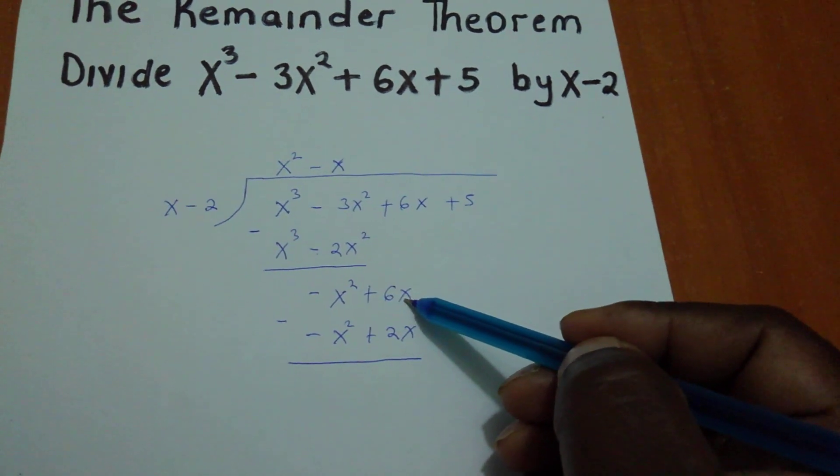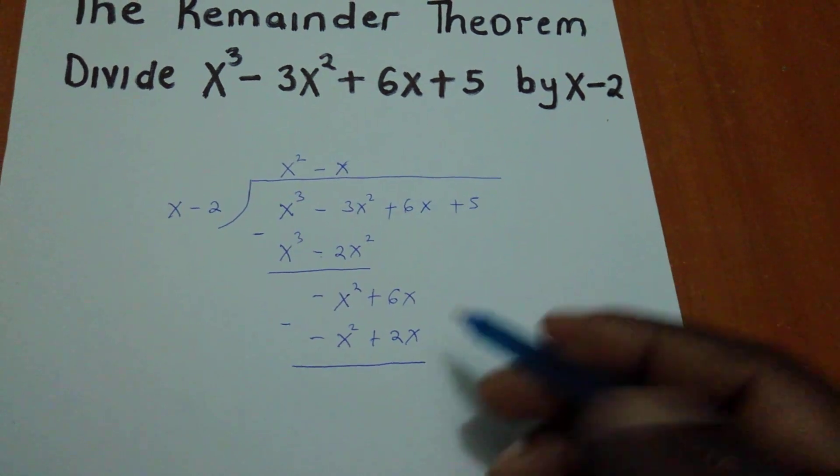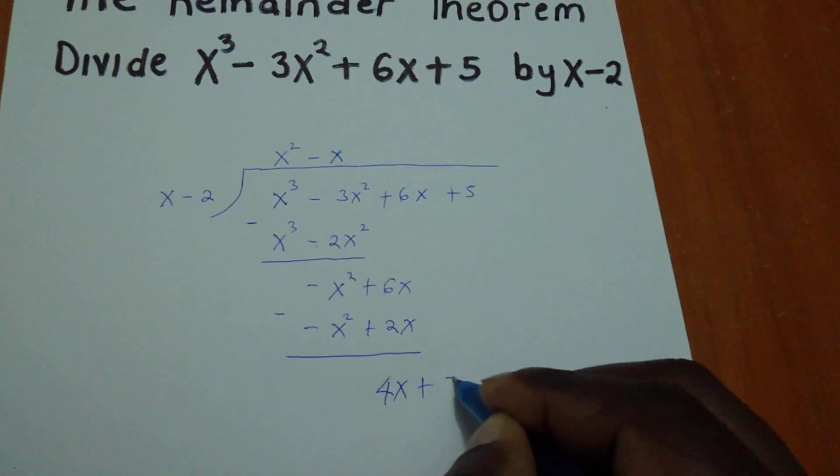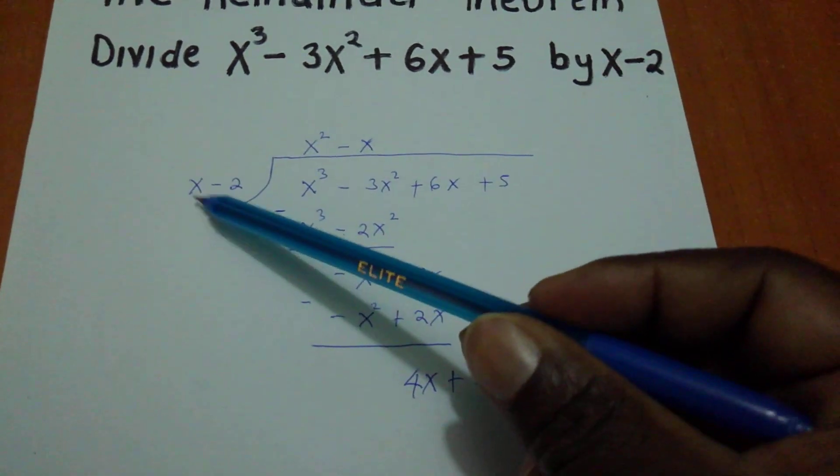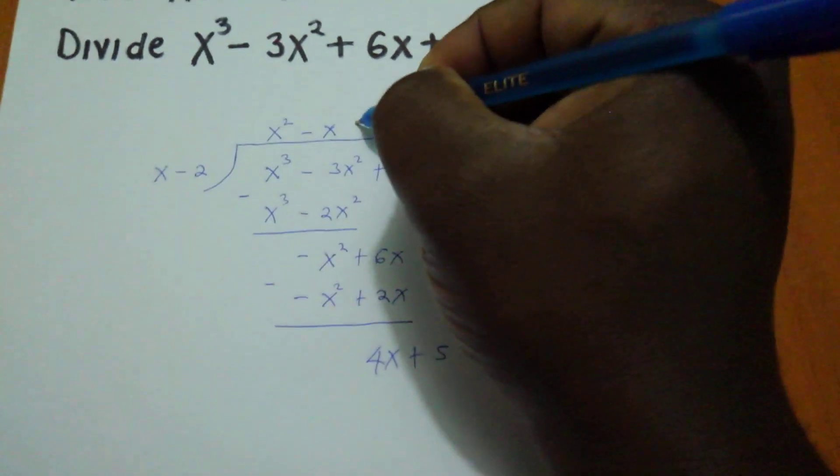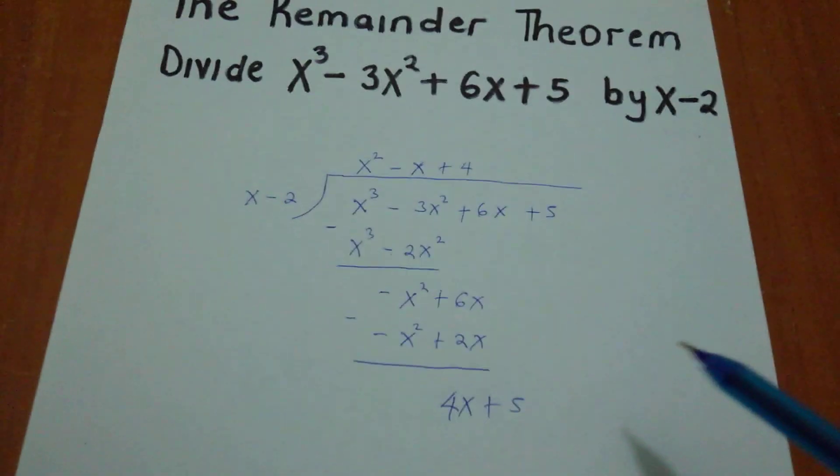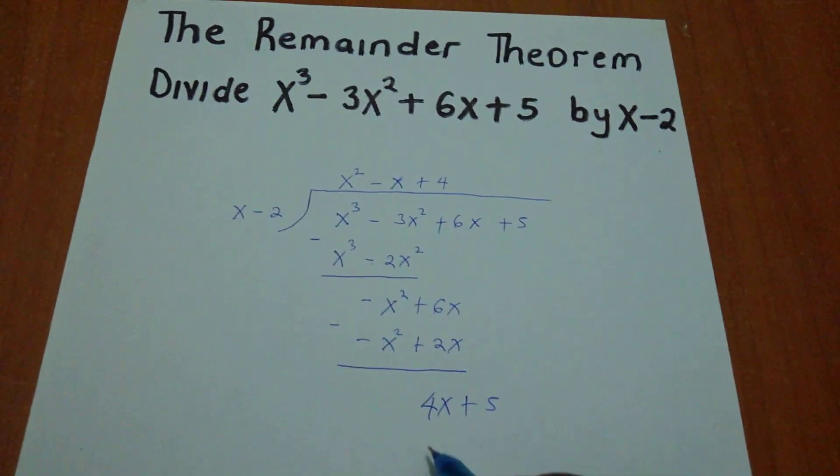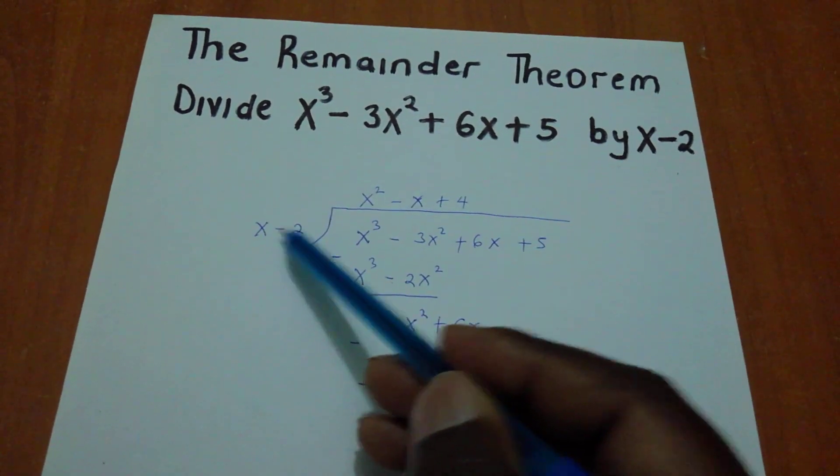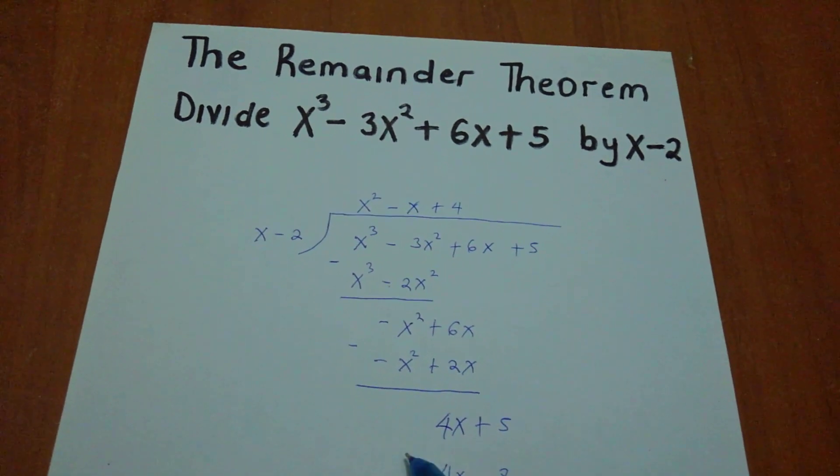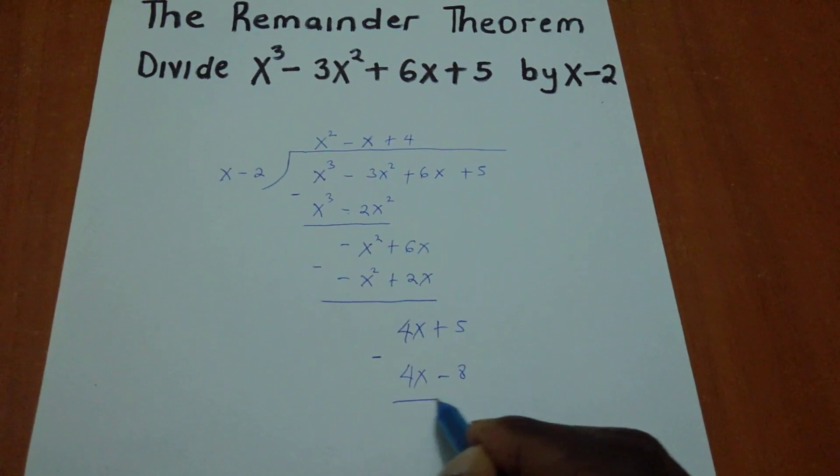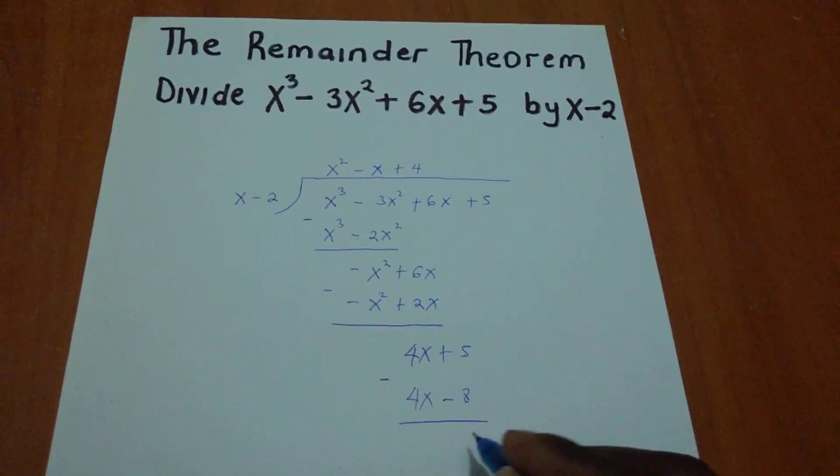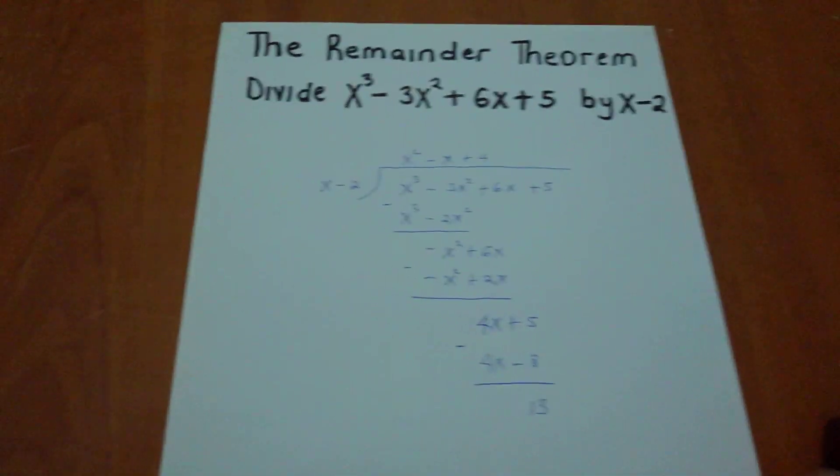We have 6x - (-2x) which equals 4x. We bring down the +5. Now x divided by 4x gives us 4. Multiplying 4 by the divisor: 4 times x gives 4x, and 4 times -2 gives -8. When we subtract, 4x - 4x equals zero.